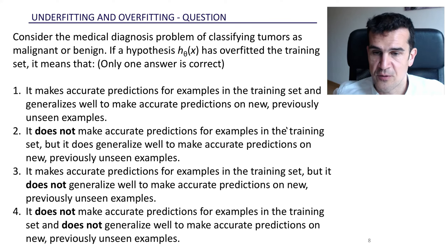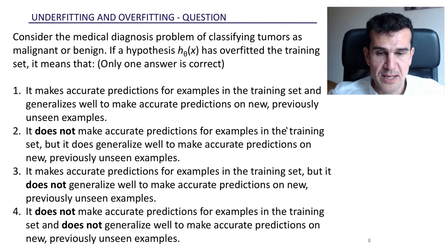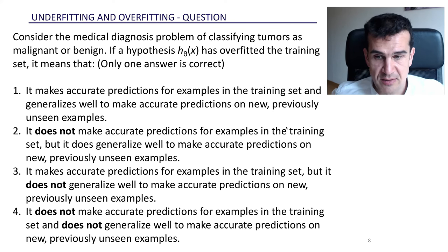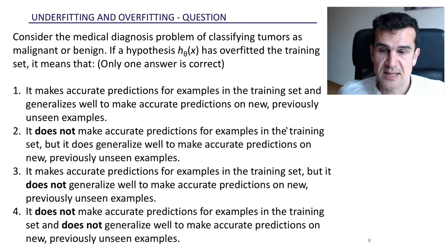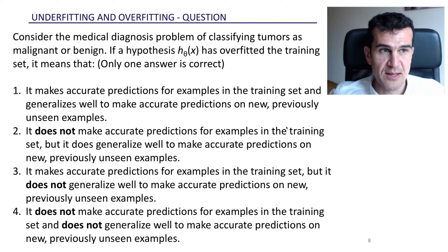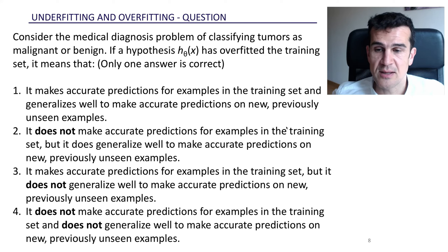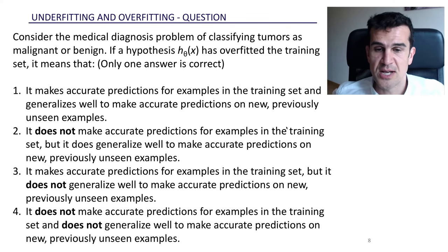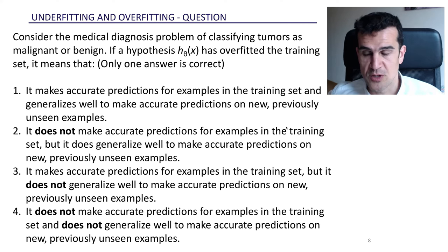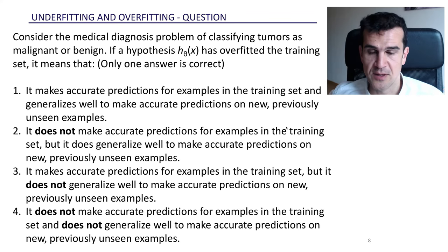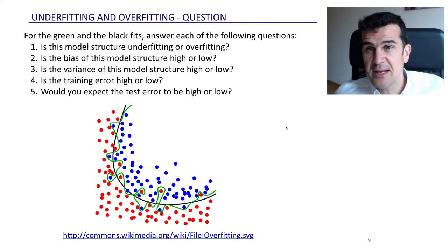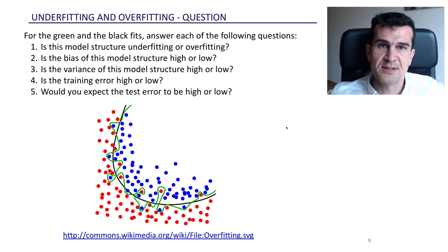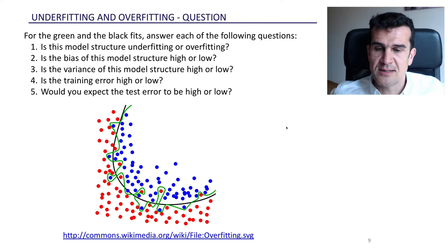And finally, answer four says that we don't make accurate predictions in the training set and in the test set on new data. So this could be underfitting. This could be that our model is too simple and it's not sophisticated enough. It doesn't have the, it's not flexible enough to capture the relationship between the input and the output. So answer four could be underfitting. For the green and black fits, answer each of the following questions. So let's start with the green.